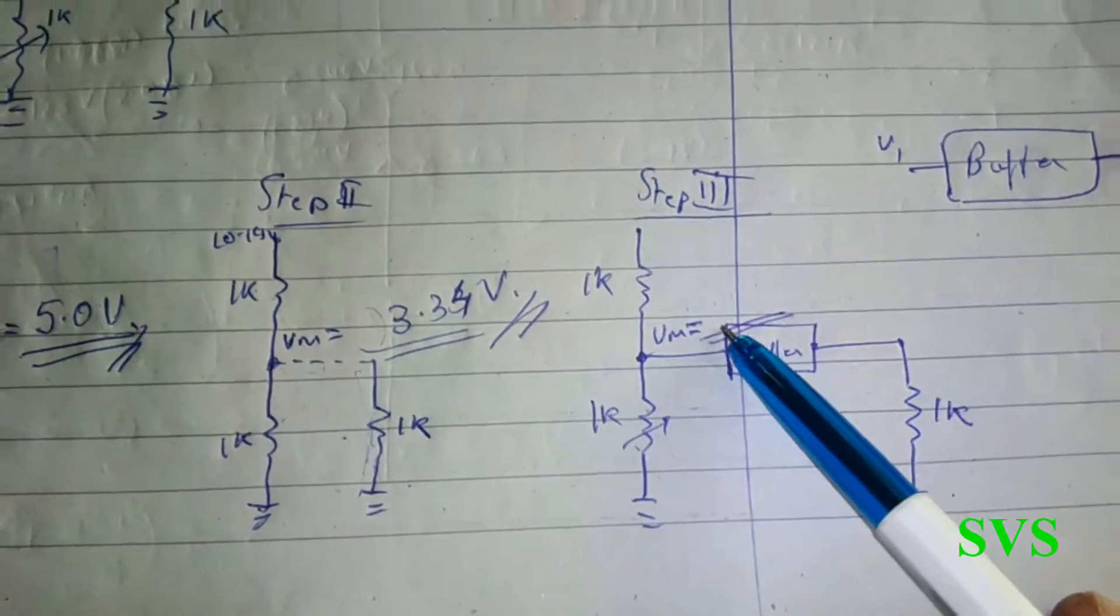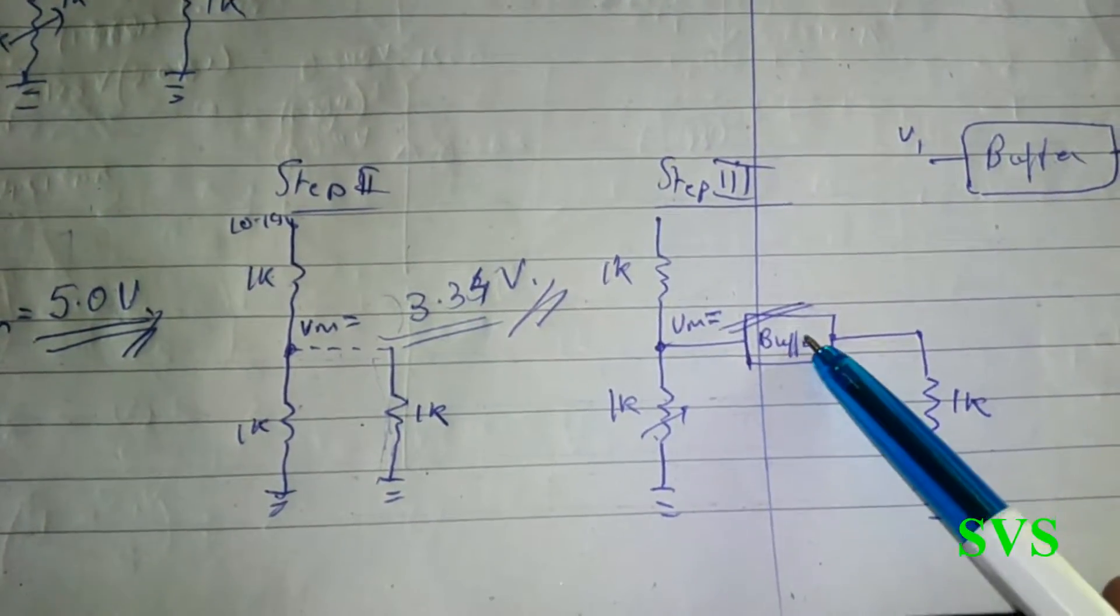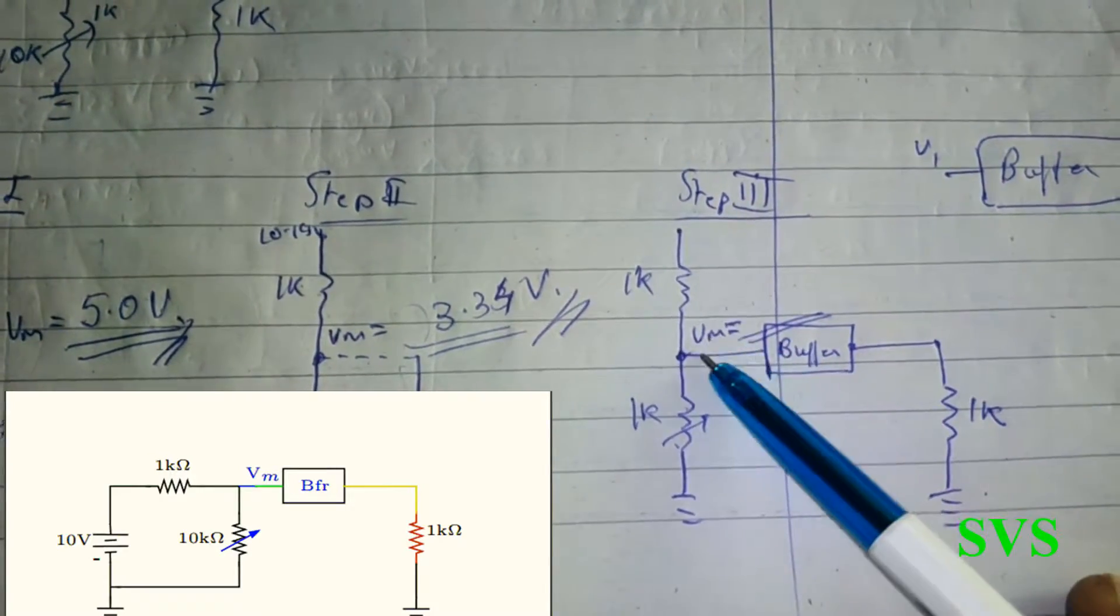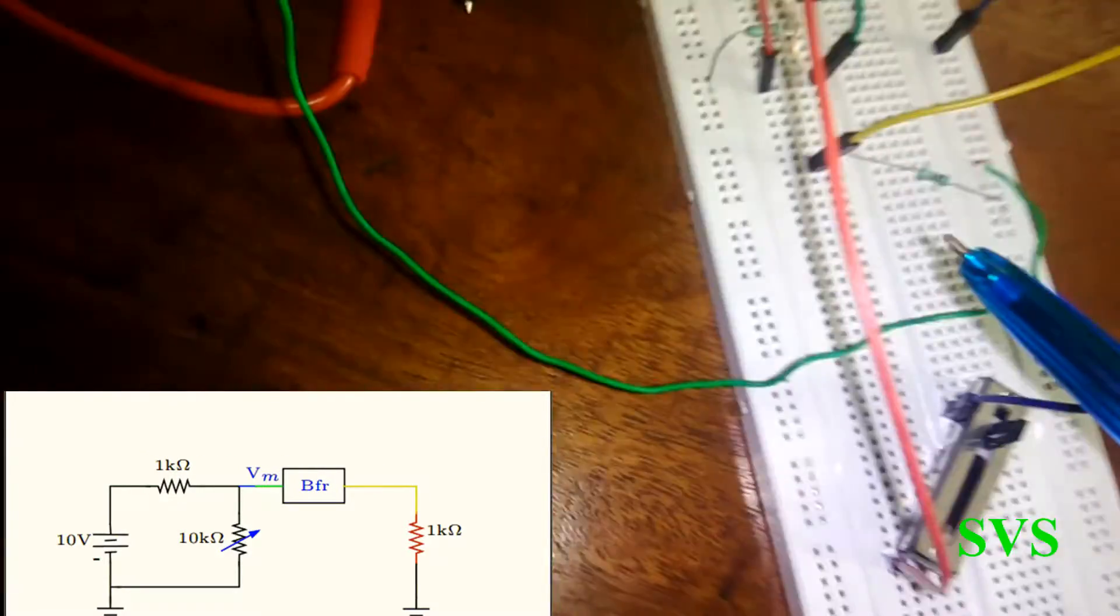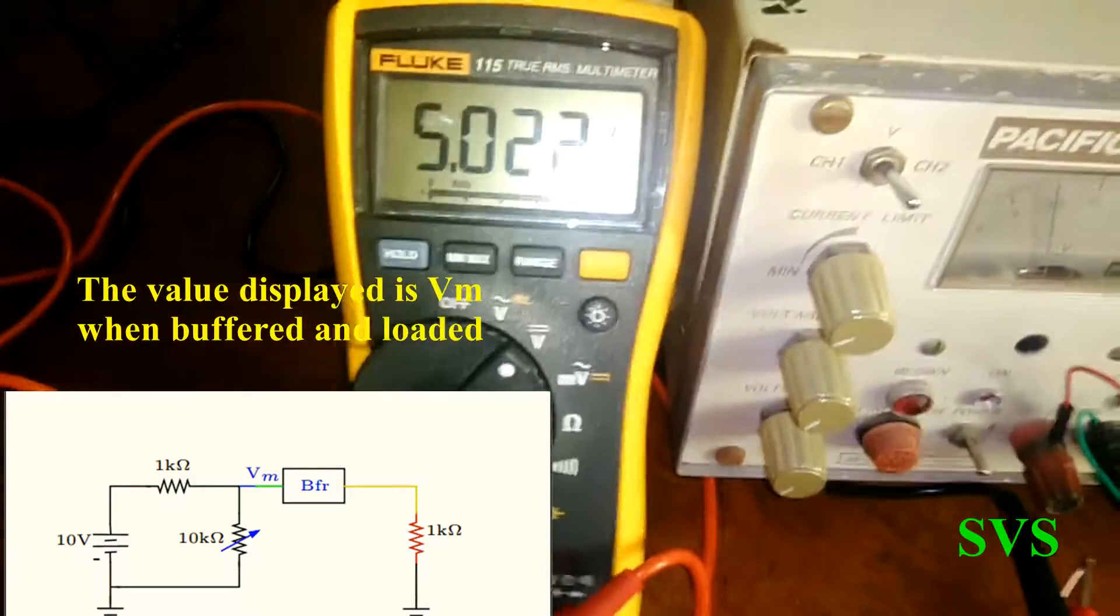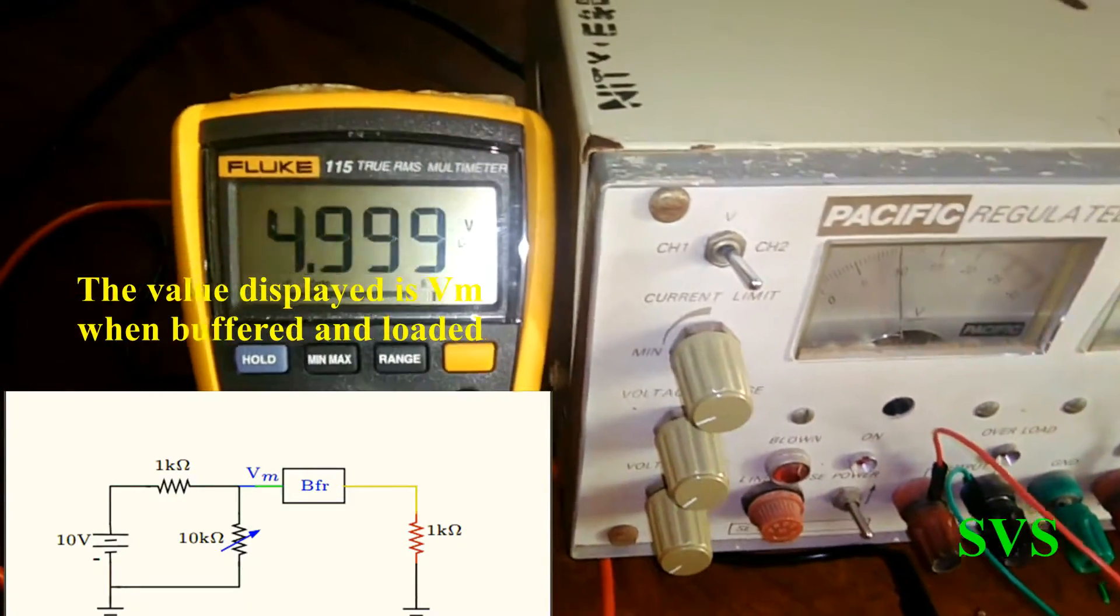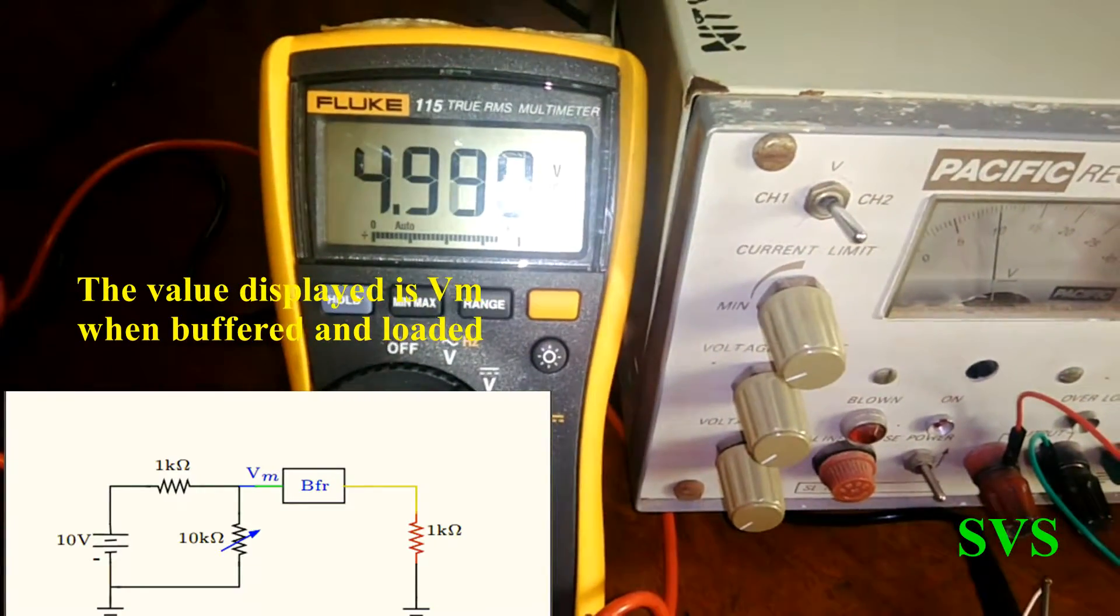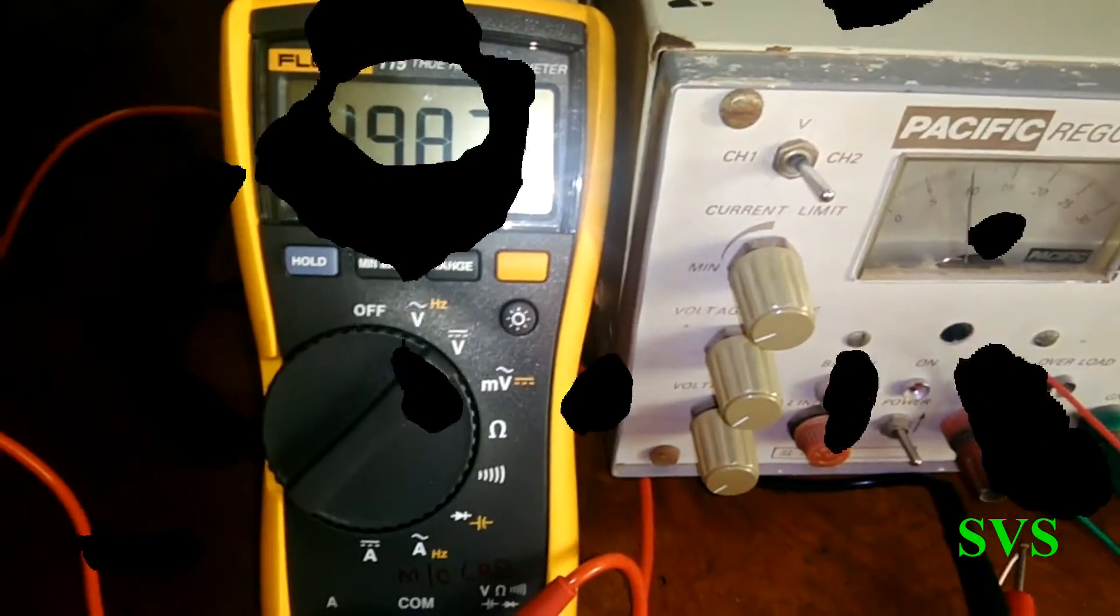But now we are using a buffer, so let's try to measure again what node voltage is appearing here. The voltage is almost the same as the earlier one, which is 5.01 volts.